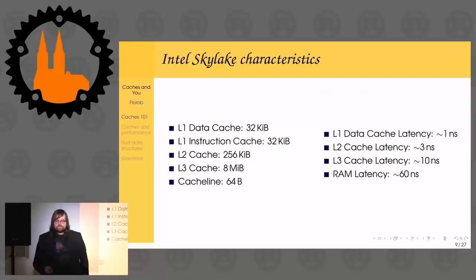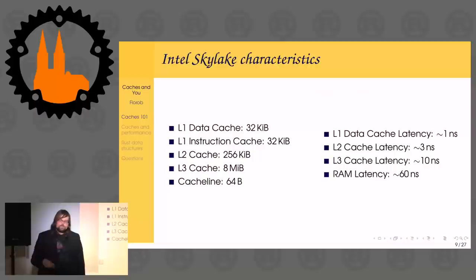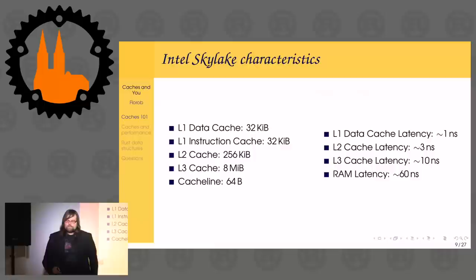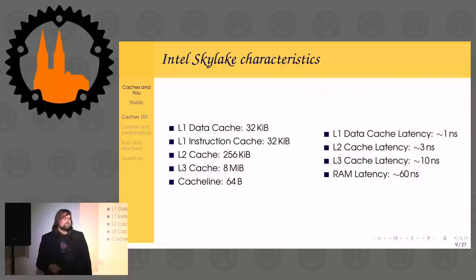Some numbers: on an Intel Skylake processor — a relatively recent i7 — L1 cache is typically 32 kilobytes in size. L2 cache is already 256 kilobytes, and L3 cache is a whole 8 megabytes. But the further from the CPU you get, the slower it is. L1 cache access is about 1 nanosecond. L2 cache is about 3 nanoseconds, L3 is about 10 nanoseconds, and RAM is 16 nanoseconds. At 4 GHz, that L1 access is already 4 clock ticks — and even if data is in L1, you have to wait 4 ticks before you can compute.